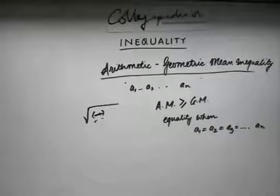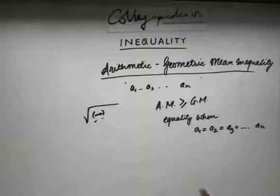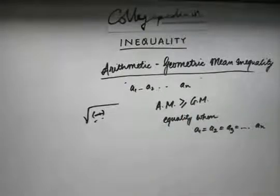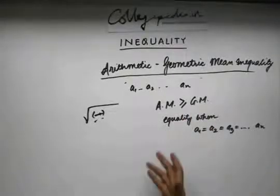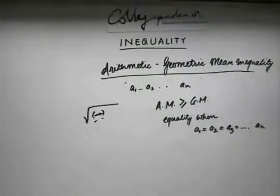Now let's come to the topic: Arithmetic Mean Inequality. We have already discussed that in this inequality, Arithmetic Mean is greater than or equal to the Geometric Mean. The equality condition holds if all the numbers are equal — if all the numbers are equal, the Arithmetic Mean is just the number and similarly the Geometric Mean is the same number.